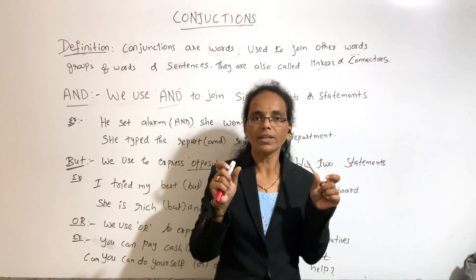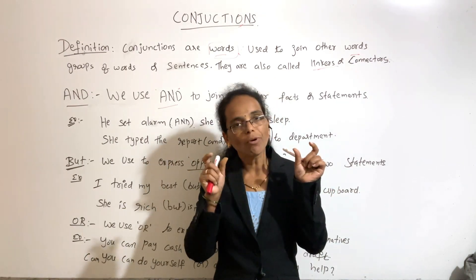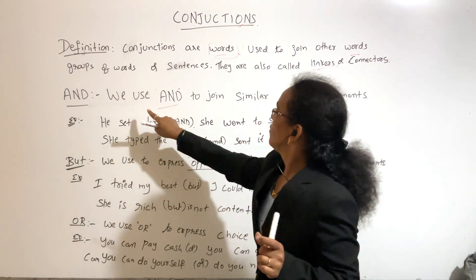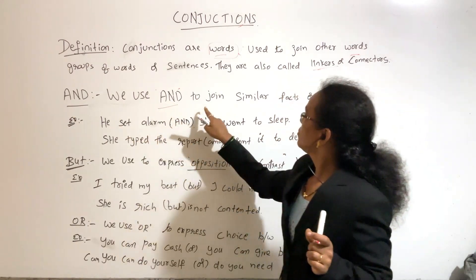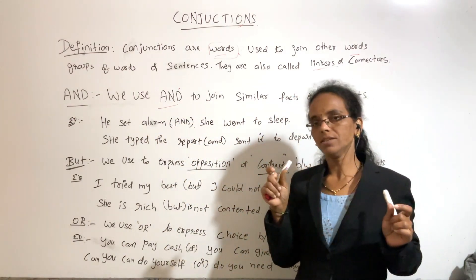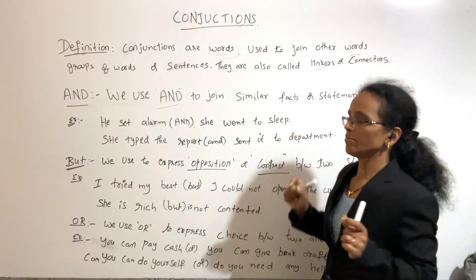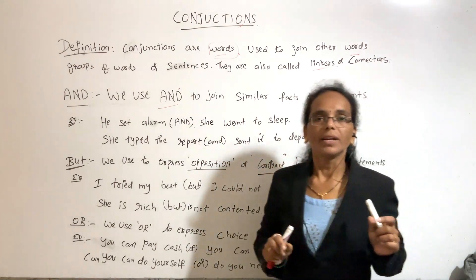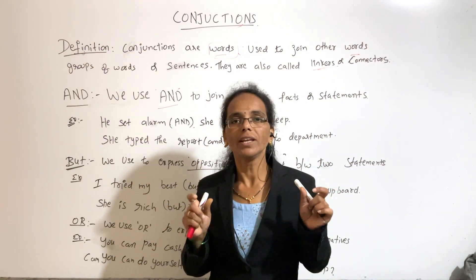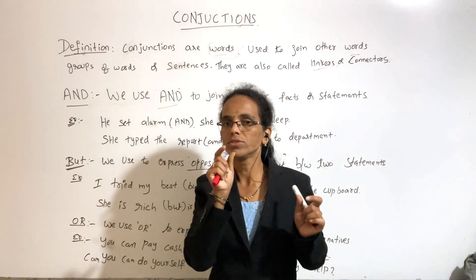One positive and one positive — we use AND. Two positive words, we use AND. We use AND to join similar facts and similar statements.